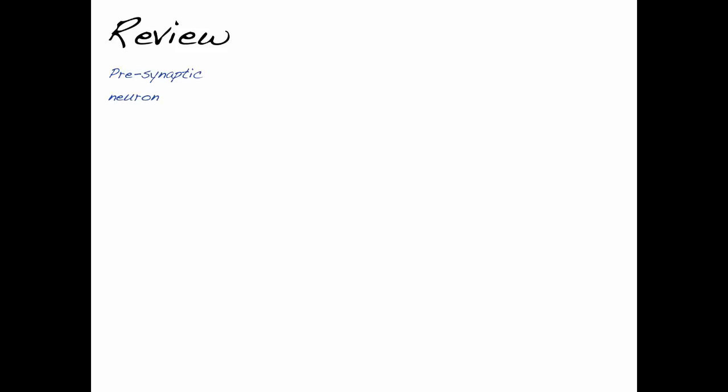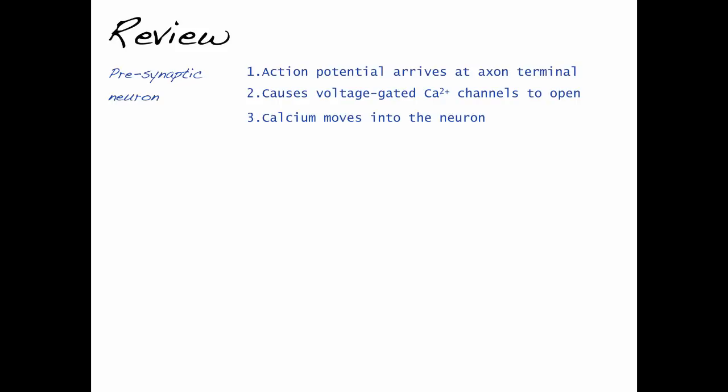So let's start at the presynaptic neuron. An action potential arrives at the axon terminal, where it causes voltage-gated calcium channels to open up. Calcium then moves into the neuron, where it stimulates synaptic vesicles containing the neurotransmitter acetylcholine to move to the plasma membrane.